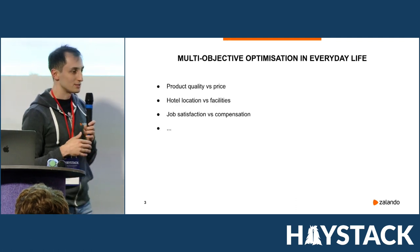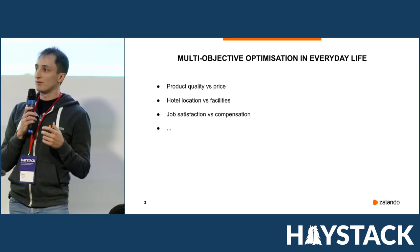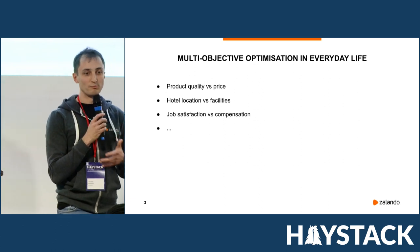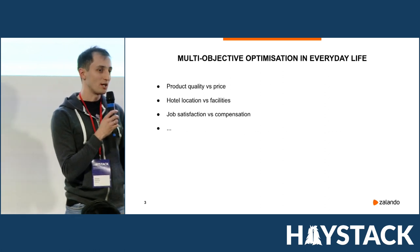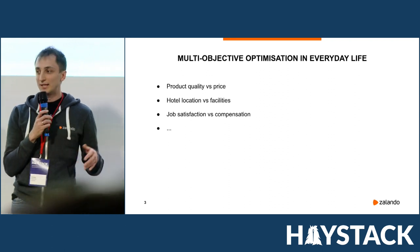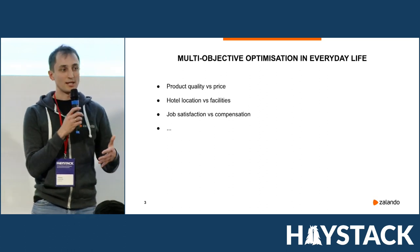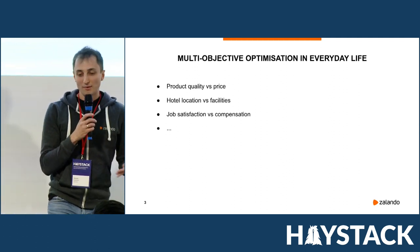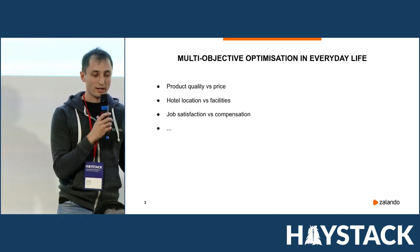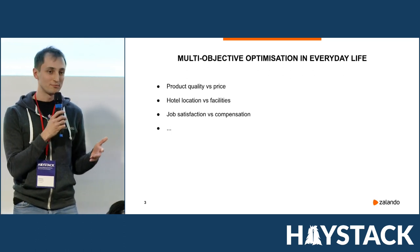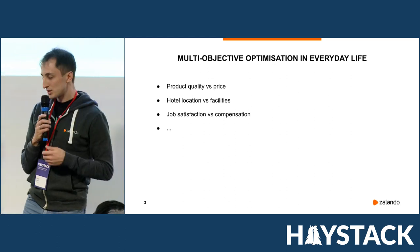One may think of multi-objective optimization as something exotic, but I can argue that this is a very common situation to be in. For example, whenever you're buying something, you want to maximize the product quality and at the same time you want to have a good deal. Whenever you're booking a hotel, you consider the distance to the city center and at the same time you want to have great facilities. Whenever you're looking for a new job, you would like it to be as satisfying as possible, but at the same time you want to maximize the compensation, or maybe you want to minimize the distance between the office and your home.